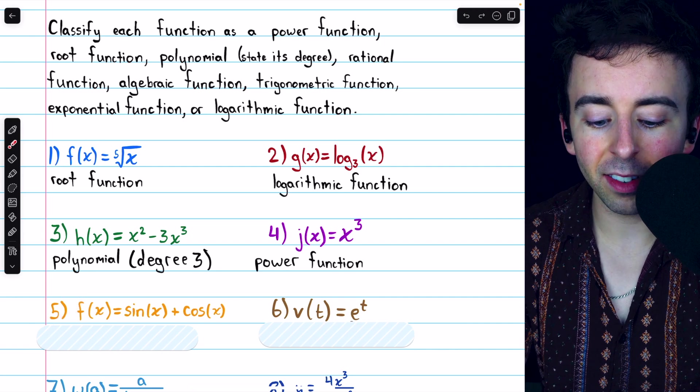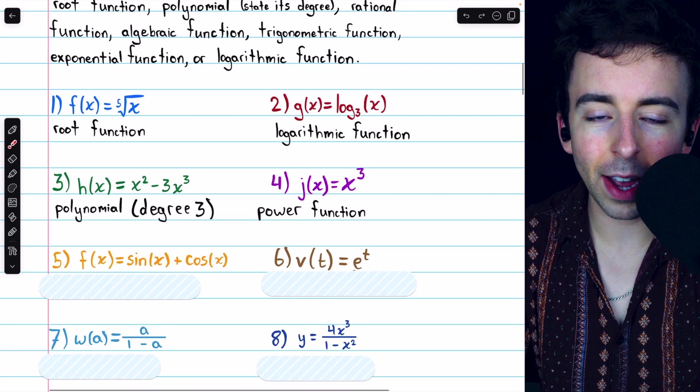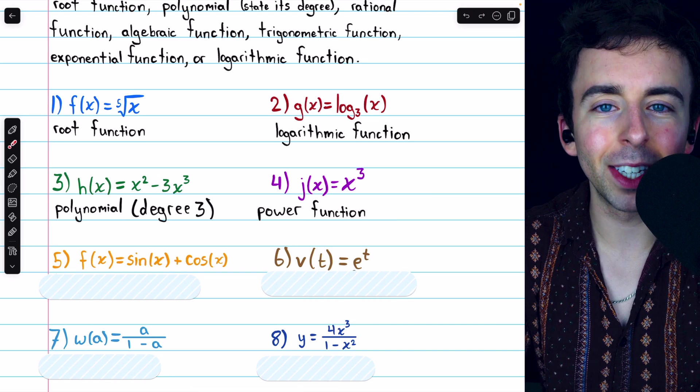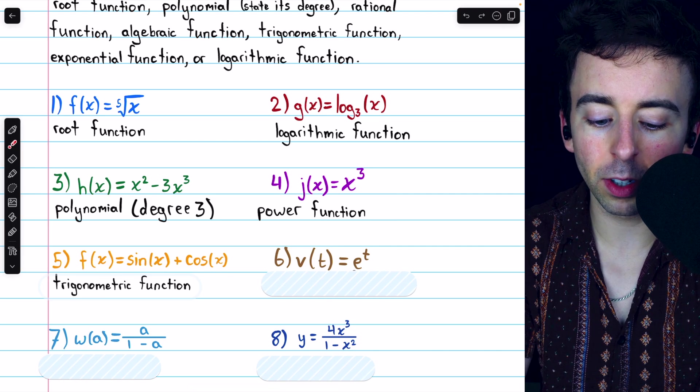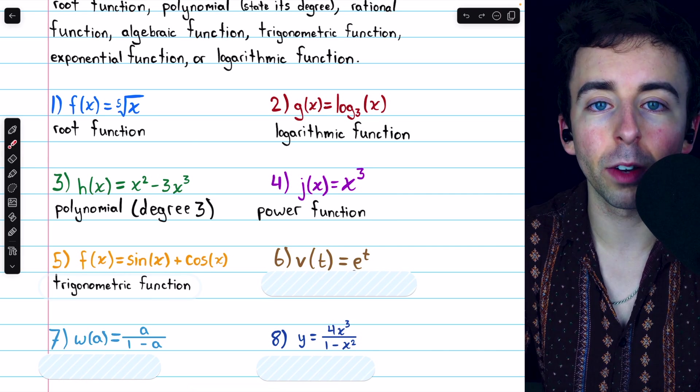Number five, f of x equals sine of x plus cosine of x. These are our beloved trigonometric functions. Sine and cosine are trig functions. If you add them together, you're still talking about a trigonometric function.